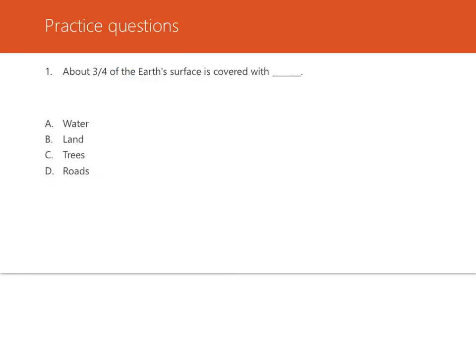Practice questions. Number one, about three-fourths of the Earth's surface is covered with what? Is it covered with water, land, trees, or roads? So about 75% or about three-fourths of Earth's surface is covered in water, so A, which appears blue from outer space. So this water includes all the oceans, lakes, and rivers, all the water on the planet.